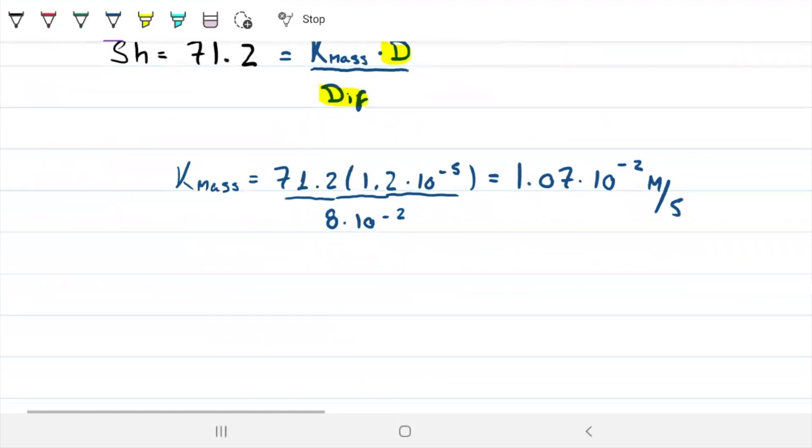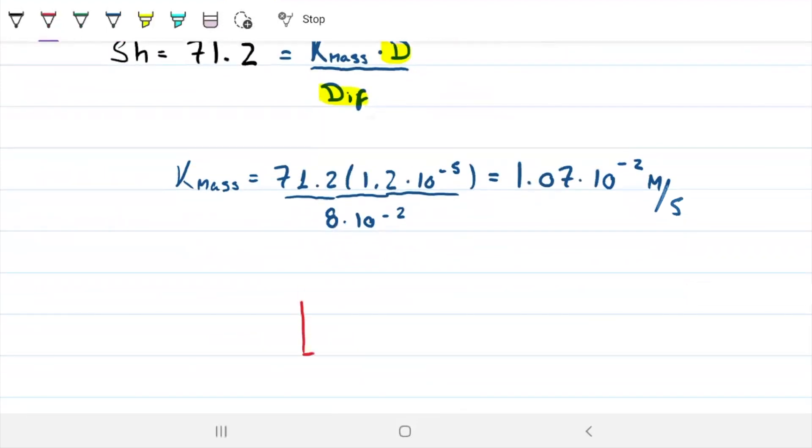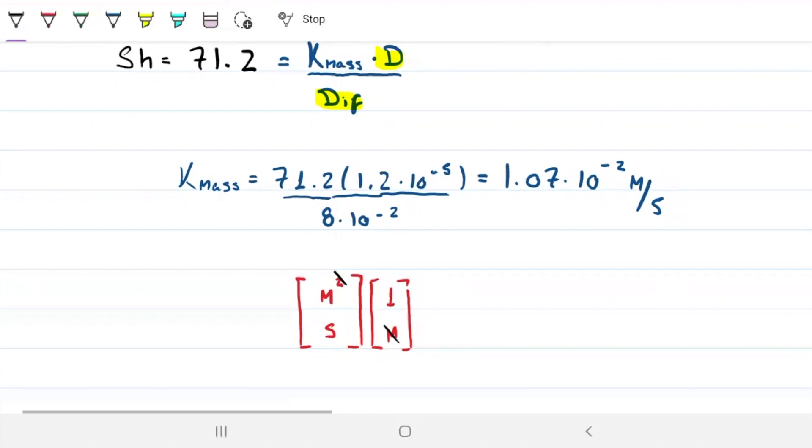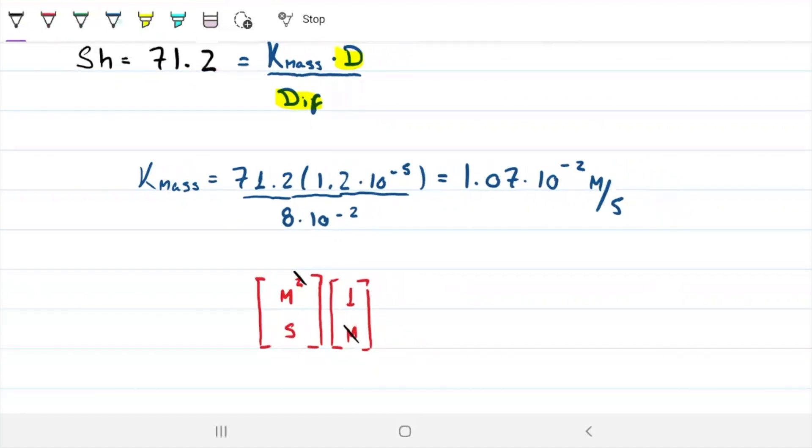Well, let's check that unit, because again, it's new, so we should make sure. Sherwood's number has no dimensions. The diffusivity, if you guys recall, is meters squared by seconds, and divided there, we have meters. Right? So obviously, meters squared cuts meters, so we're left with meters per second. So same unit as velocity. And that is our answer.